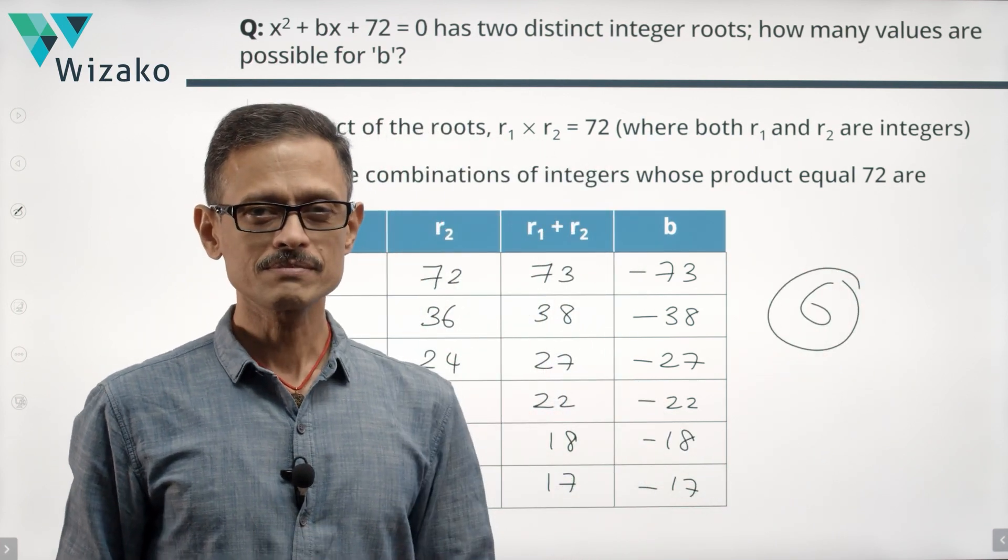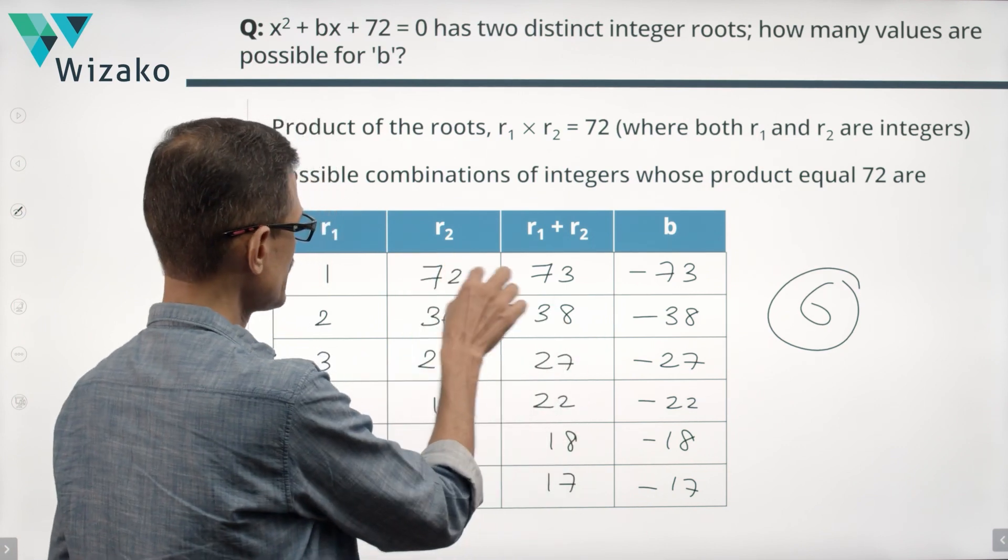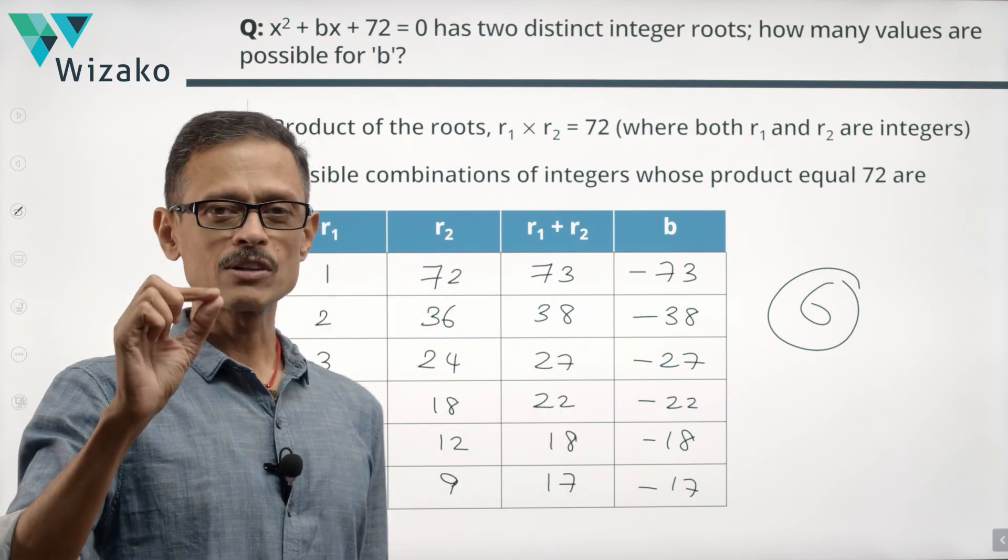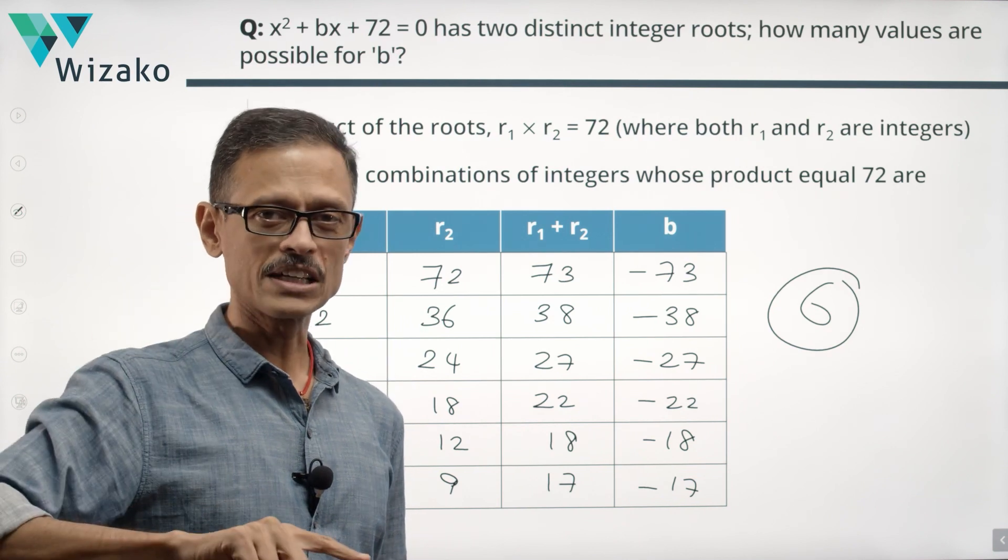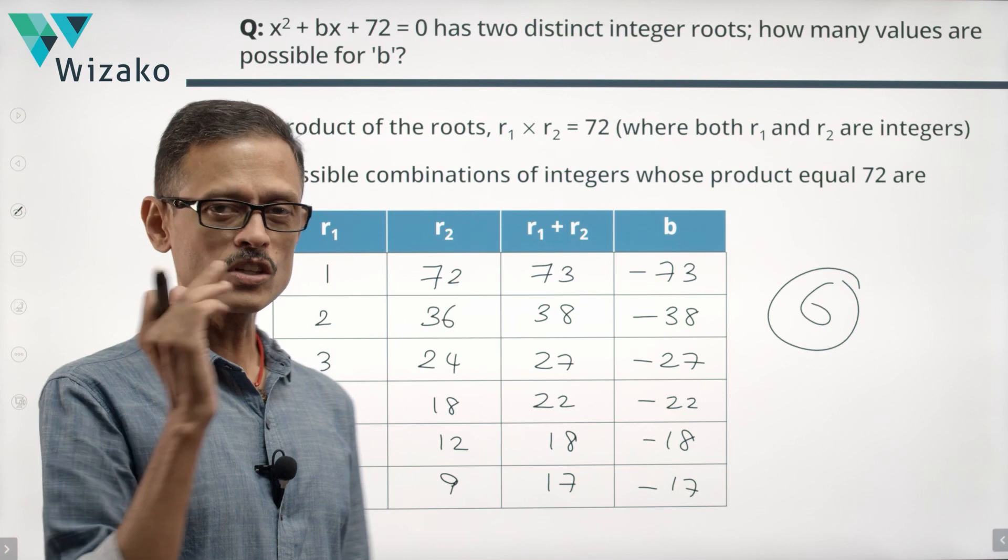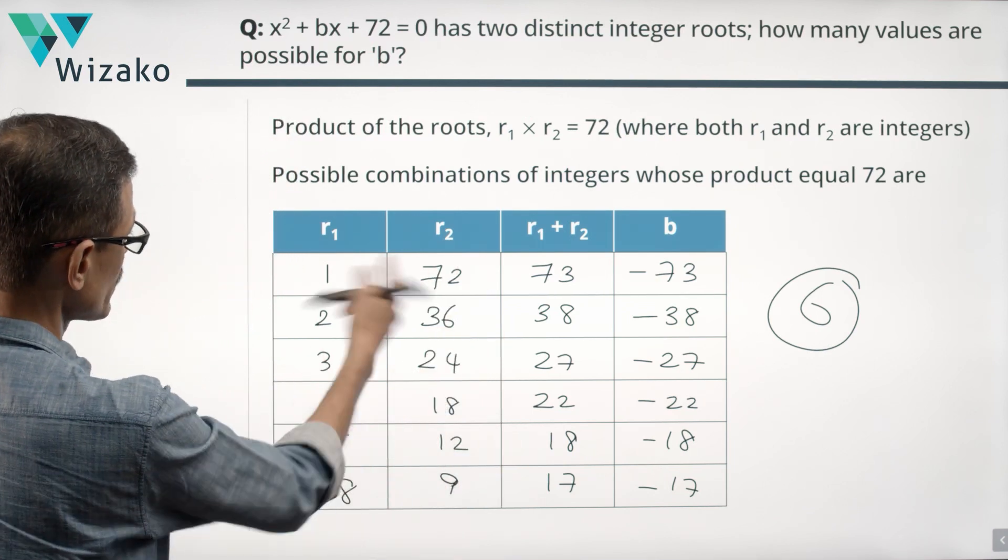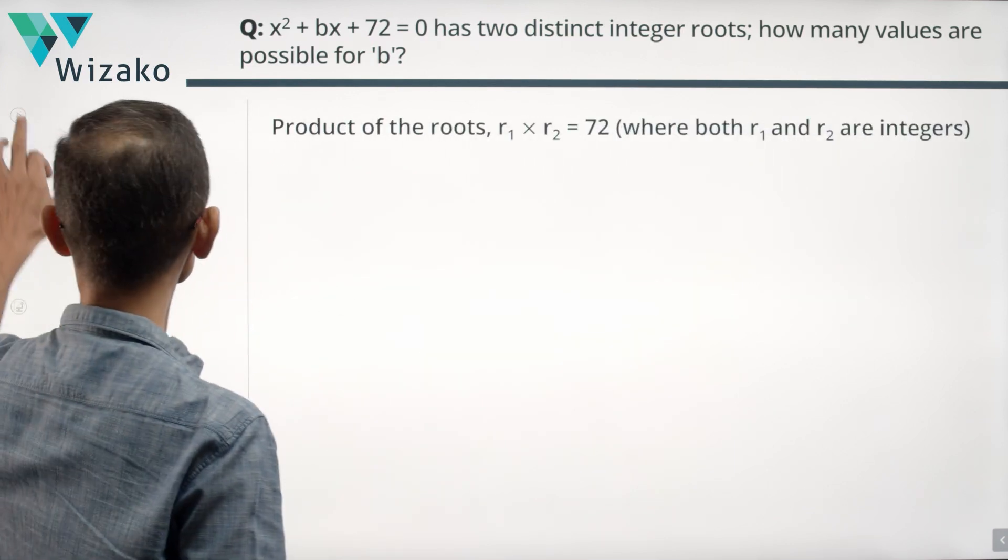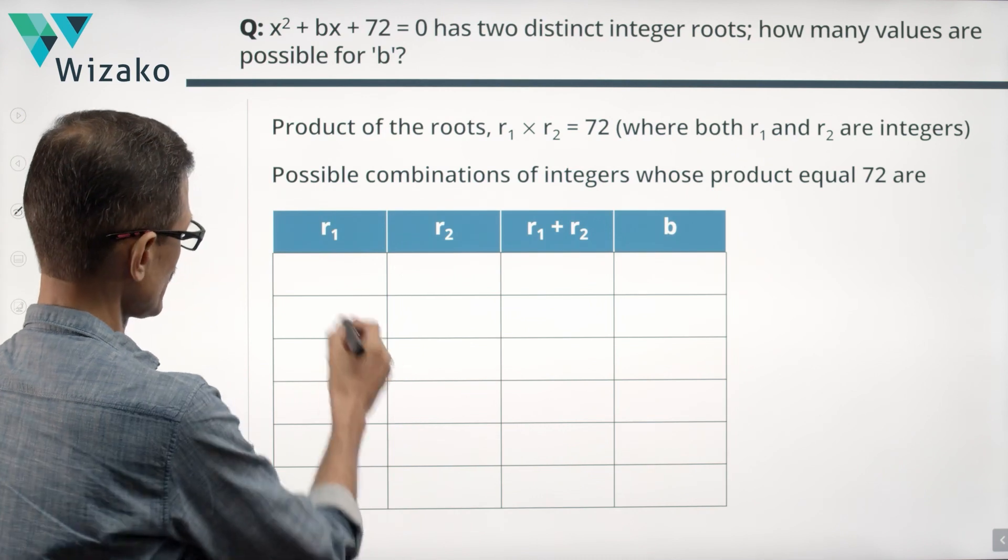But hold on. Will the product be 72 only when R1 and R2 are both positive or can the product be 72 with both R1 and R2 being negative as well? That's also a possibility. So 6 values when R1 and R2 took positive values. We'll just list on when they take negative values as well.